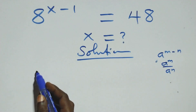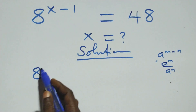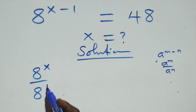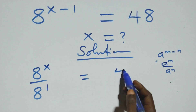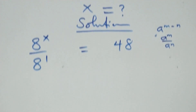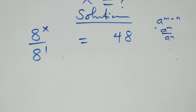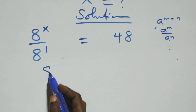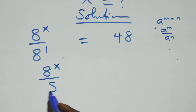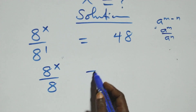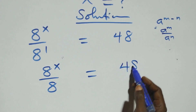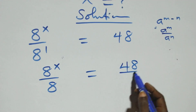This becomes a raised to power x over a raised to power 1, equals 48 on this side. We write this as a raised to power x over a raised to power 1 equals 8, then we can express the right side as 48 over 1.